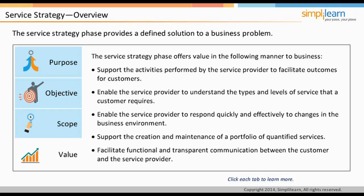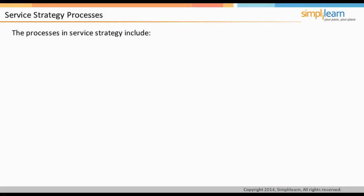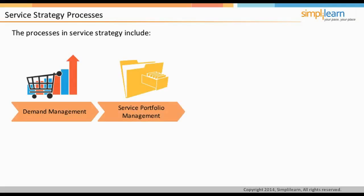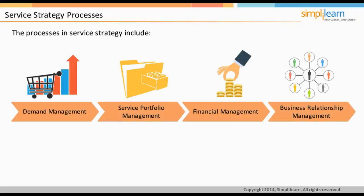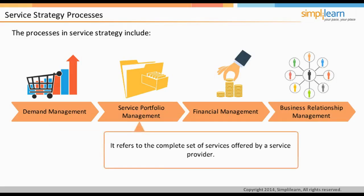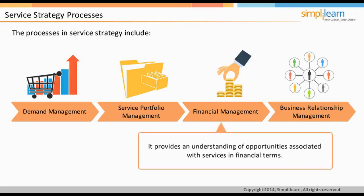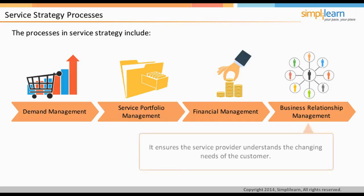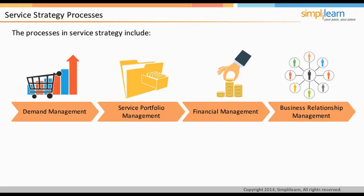The processes in Service Strategy include demand management, service portfolio management, financial management, and business relationship management. Demand management is the process of understanding the demands for services. Service portfolio management refers to the complete set of services offered by a service provider. Financial management provides an understanding of opportunities associated with services in financial terms. Business relationship management ensures that the service provider understands the changing needs of the customer. These processes are explained in detail later in this unit.